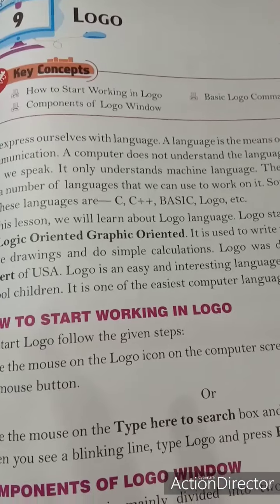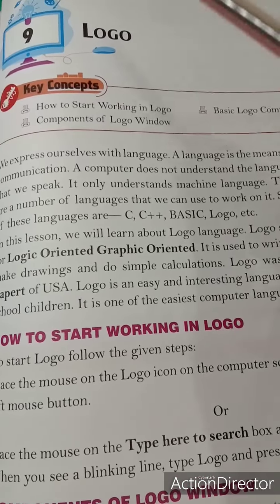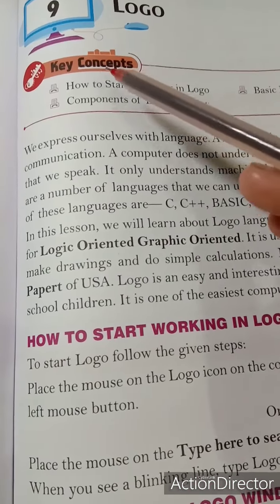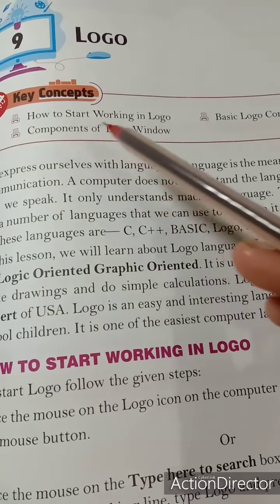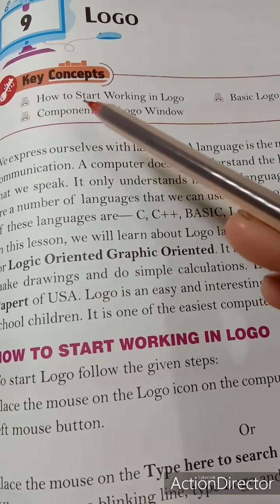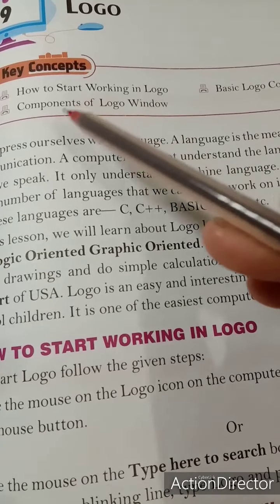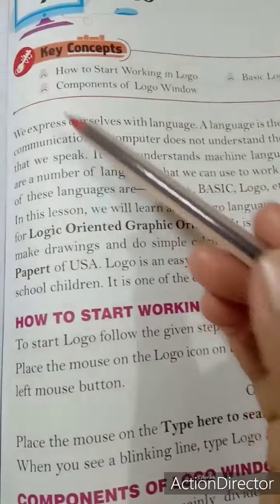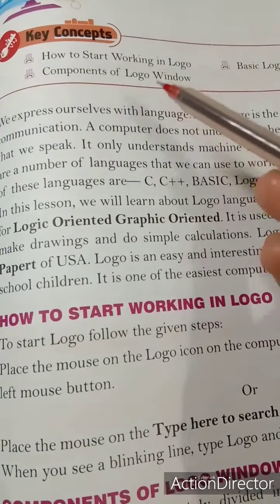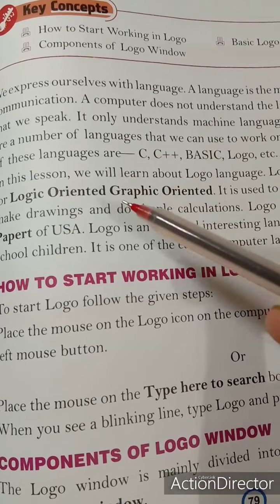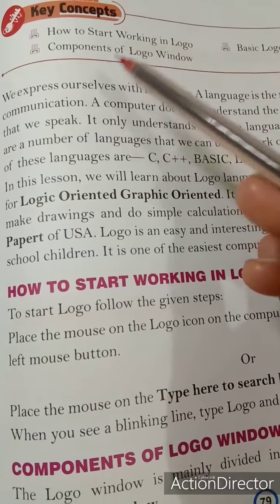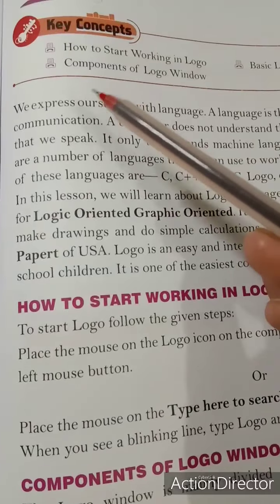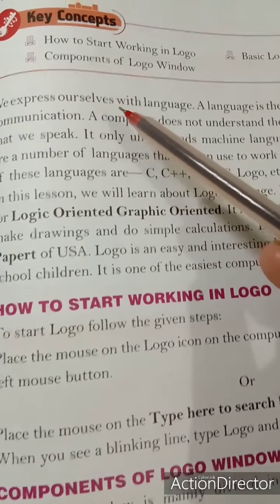Hello students, welcome to computer class. Today we will read chapter number nine. The name of the chapter is 'Logo.' The key concepts and main points we are going to read in this chapter include: how to start working in Logo, components of the Logo window, and basic Logo commands. We will explain these headings stepwise in detail. Let's start reading from the first line of the chapter: we express ourselves with language.